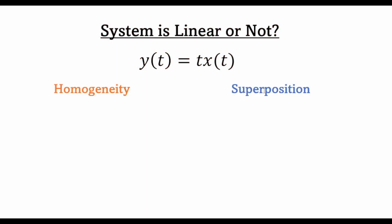Hello and welcome to T Academy. In today's lecture we'll be checking whether the system y(t) = t·x(t) is linear. In order to check whether a system is linear, it has to conform to the principles of homogeneity and superposition, which I covered in one of my previous lectures. So let's review those principles briefly and then start analyzing this problem.